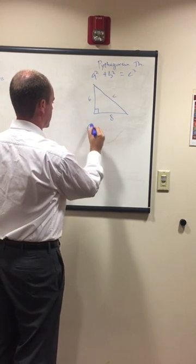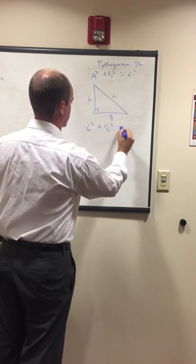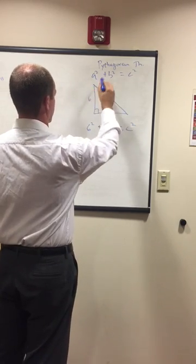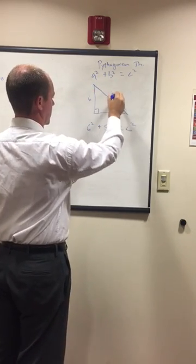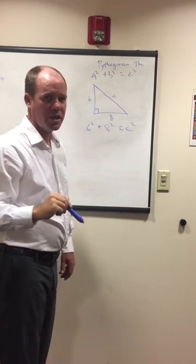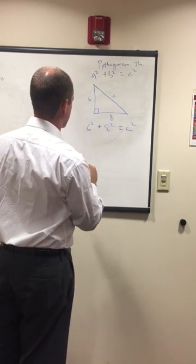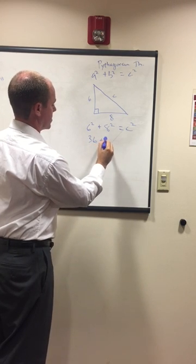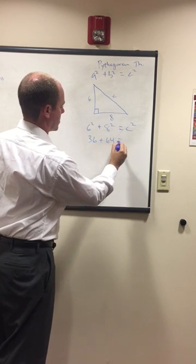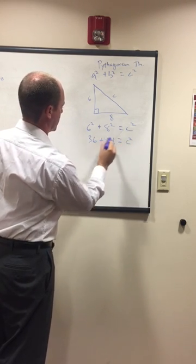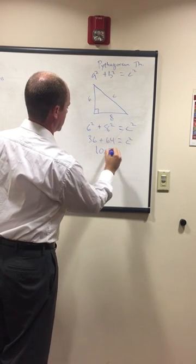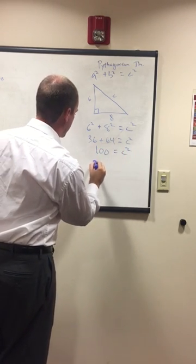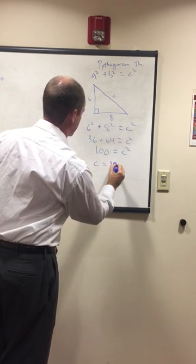We have six squared plus eight squared equals C squared. Remember, we're just going A squared plus B squared equals C squared. Six squared is 36 plus eight squared is 64 equals C squared. These two add up to 100 equals C squared. Then we've got to square root it and we will have C equals 10.